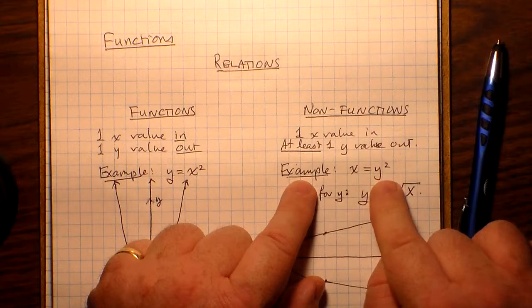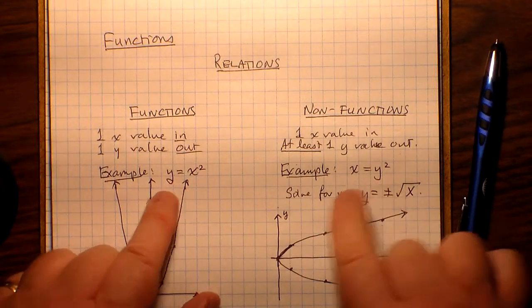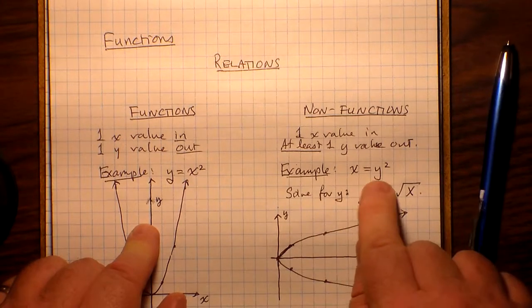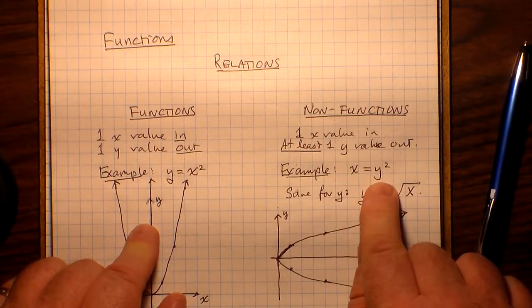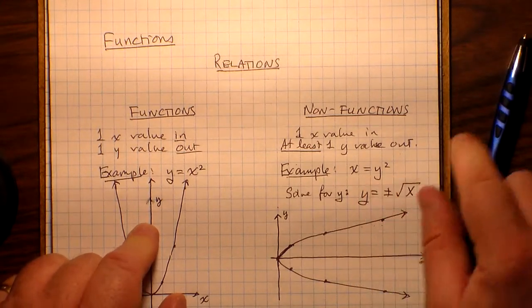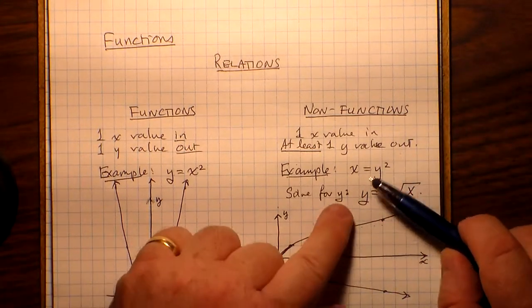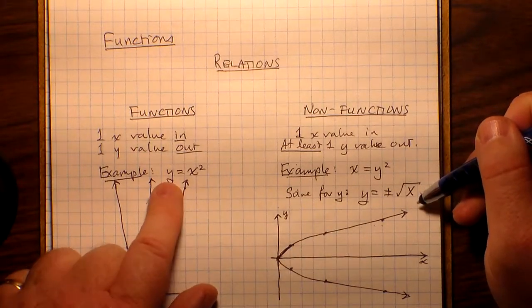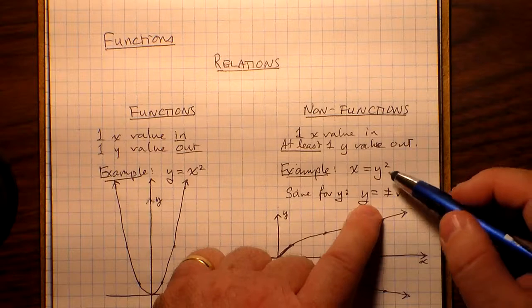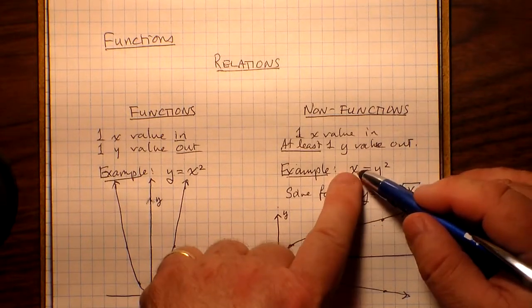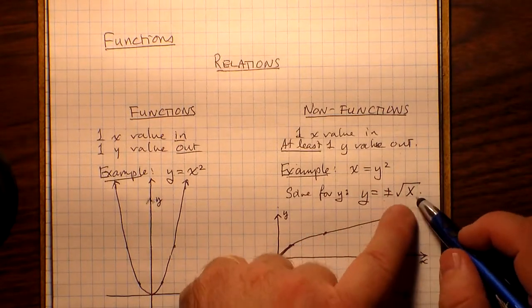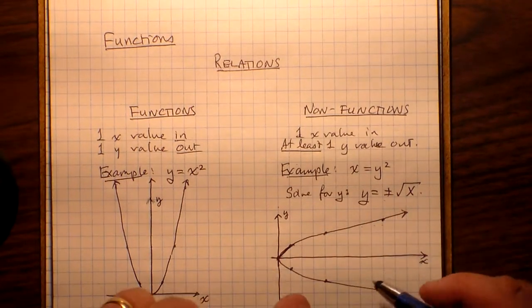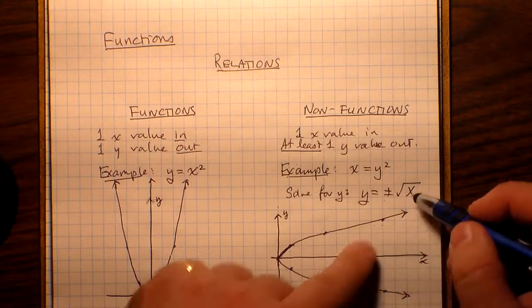x = y². Now note the similarity: over here, y = x² is a function. x = y² is not a function. To see this, you have to take a look at the graph. Now before we do so, why don't we solve for y in terms of x, just like we did over here? If we solve for y in terms of x, we have to take the square root of both sides, making y = ± √x. What that means is if I stick in a value like 4 here...